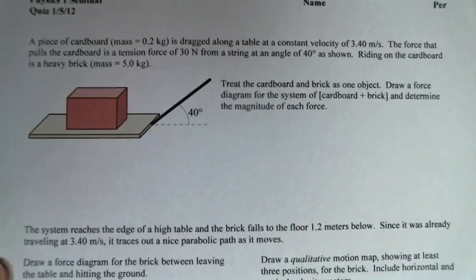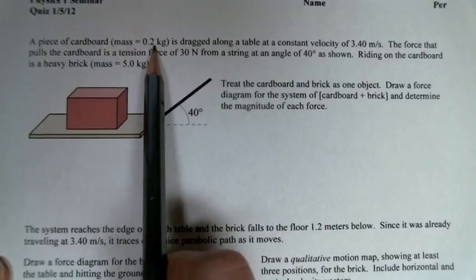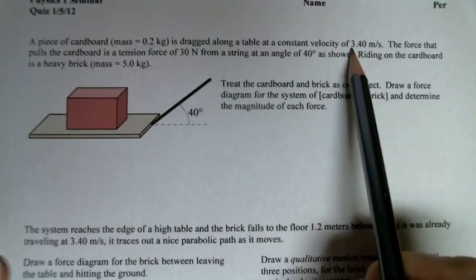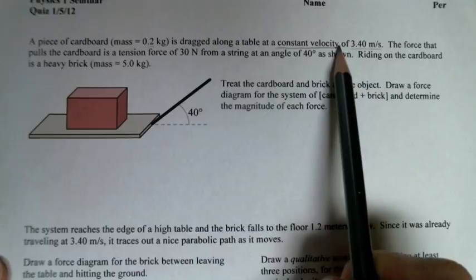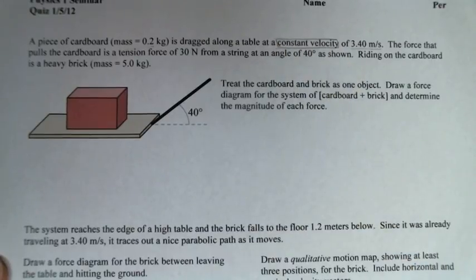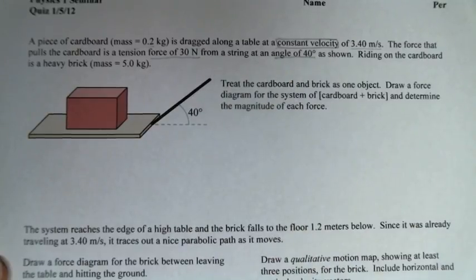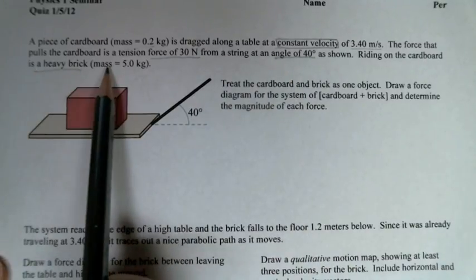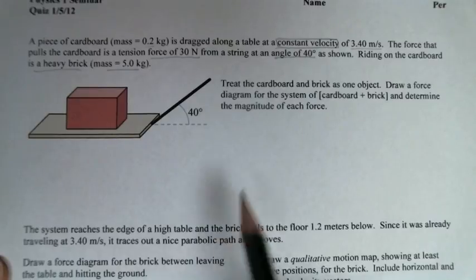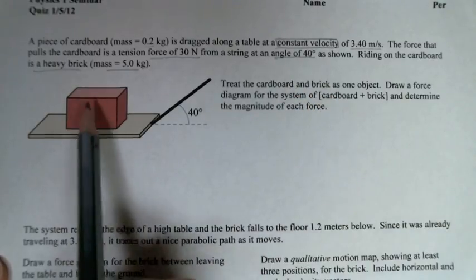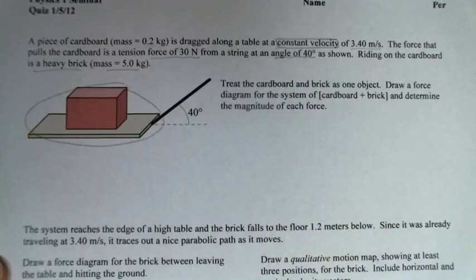We've got a piece of cardboard, we know its mass, it's being dragged along a table at constant velocity. Constant velocity is important here. It's being pulled by a tension force of 30 newtons, the string is at an angle, and there's a heavy brick. The cardboard and brick is going to be one object. We want to draw a force diagram and determine the magnitude of each force.